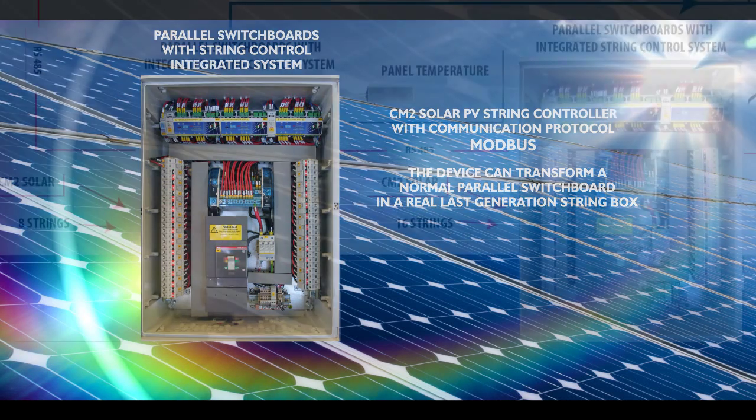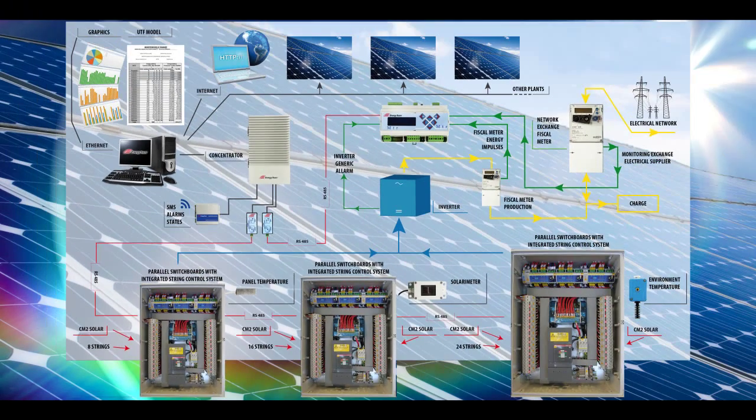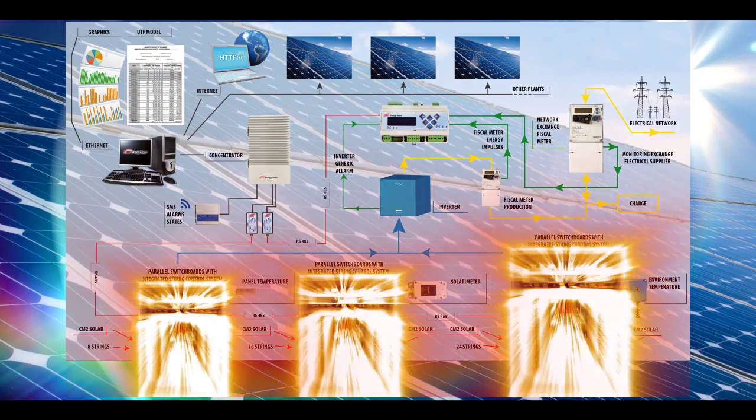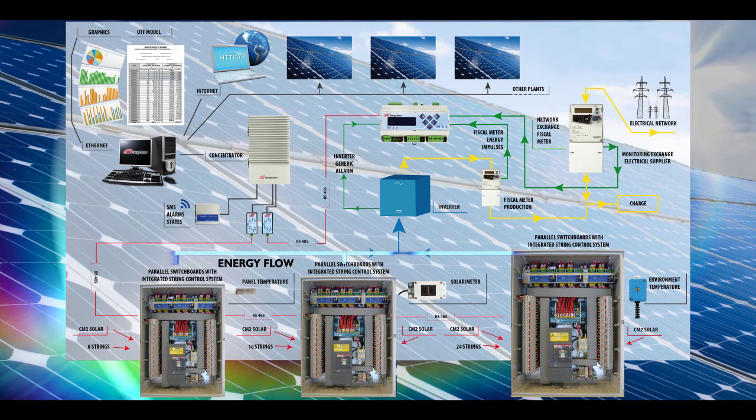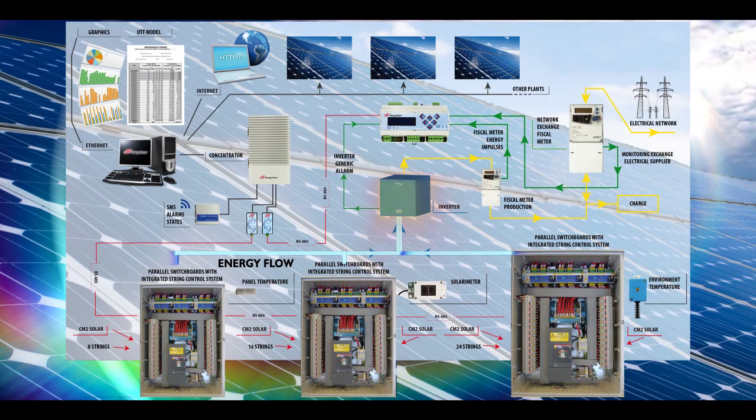Data concerning electrical parameters, state, alarms and environmental parameters. In the next step, the flow of energy in the form of direct current passes through the string control switchboards and moves towards the inverter where it is converted into alternate current.